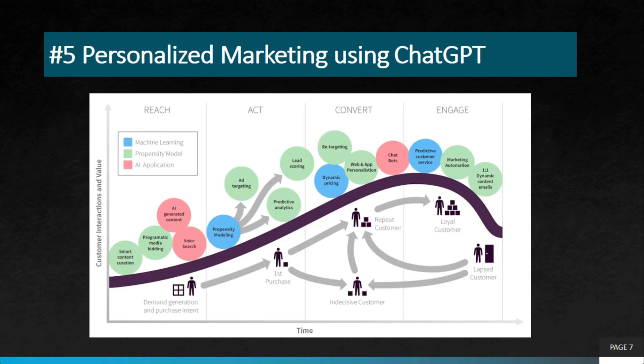The next project is personalized marketing using ChatGPT. This project involves training a ChatGPT model to analyze customer behavior and preferences. The model can identify patterns and trends that indicate customer preferences by analyzing customer data, helping businesses deliver targeted and personalized marketing messages that increase customer engagement and loyalty. Do remember to ensure compliance with GDPR when using this ChatGPT model.